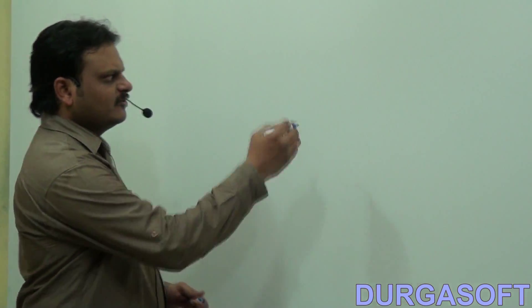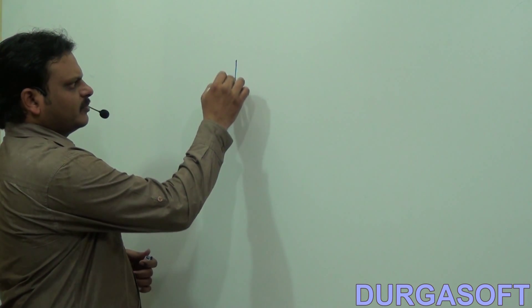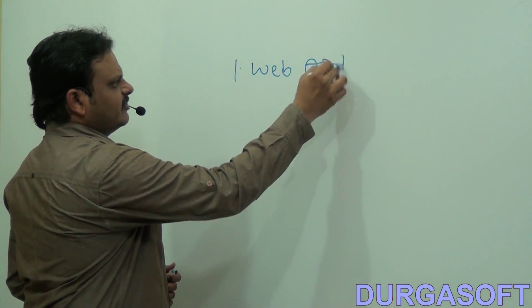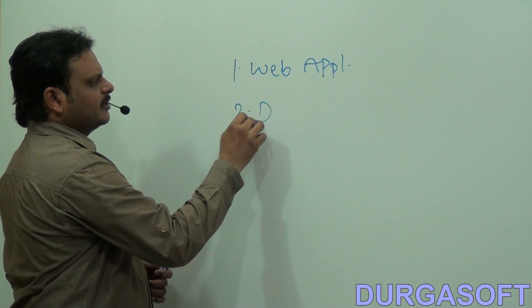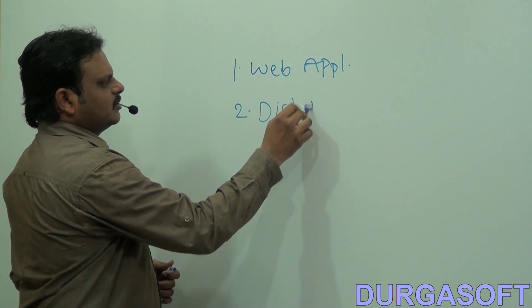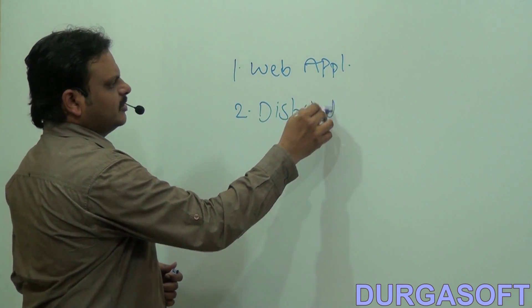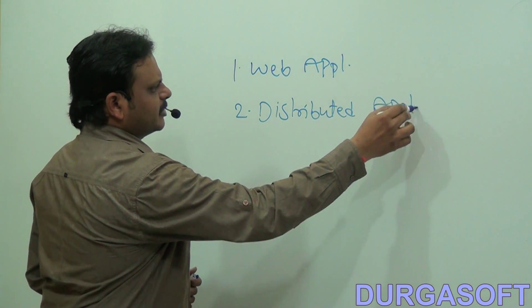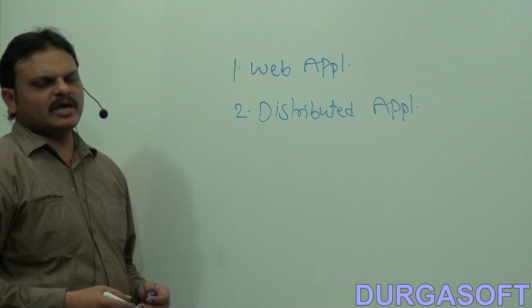After understanding enterprise applications and their levels, we need to understand the types of enterprise applications. In general, there are two types of enterprise applications: the first one is web applications and the next one is distributed applications.